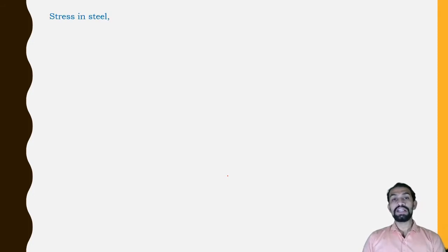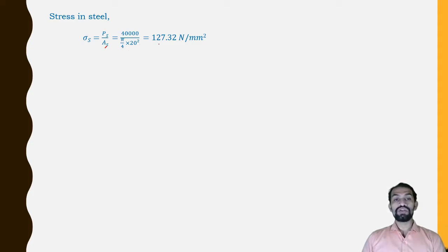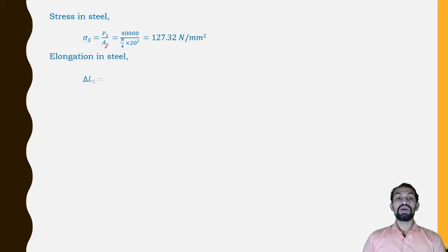Stress in steel is given by σ_s = P_s / A_s, that is, force acting on the steel divided by area of steel. The force is 40 kilo newton, converted to 40,000 N. Divided by area = (π/4) × 20², the stress in steel comes out to be 127.32 N/mm². Now moving to elongation in steel.